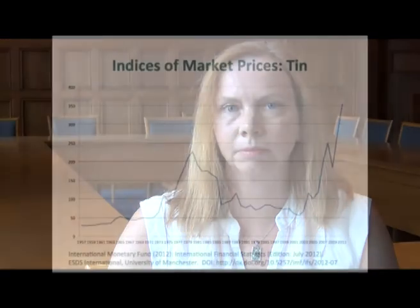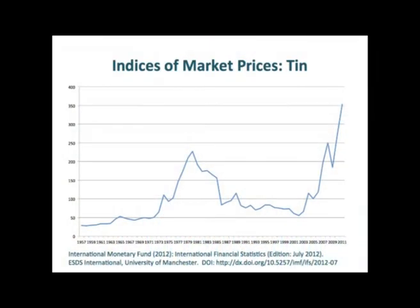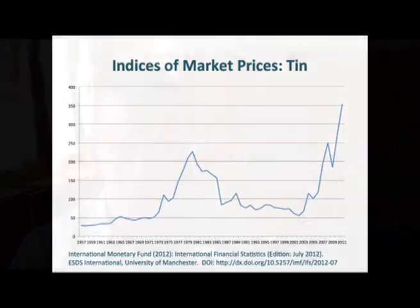The commodities prices section gives the world prices and indices for around 100 commodities. The prices are in US dollars and the indices are relative to a base year. For example, here is the price of tin plotted as an index with a base year of 2005. Notice how it shoots up in the commodities boom of recent years.